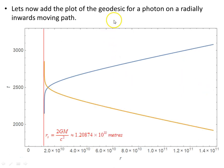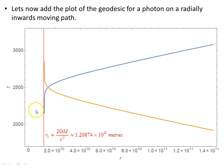We can also add the geodesic for a photon on a radially inward-moving path. Notice the Schwarzschild radius and the asymptote at the Schwarzschild radius, 2GM/c², where the line element becomes undefined. This represents a coordinate singularity and not a real physical singularity — in other words, as a consequence of the coordinates used, we end up with this singularity, which does not actually represent a physical barrier to the motion of objects.